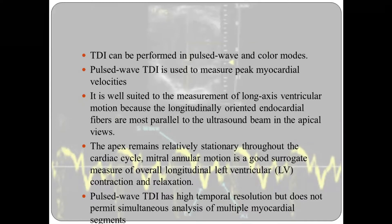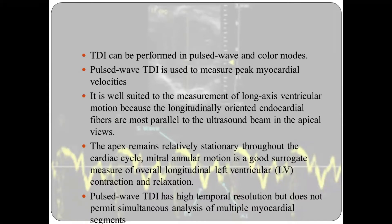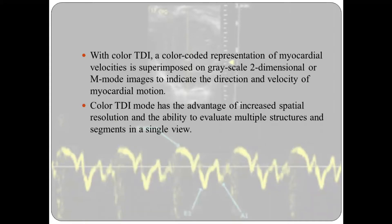Tissue Doppler imaging can be performed in pulse wave or color mode. Pulse wave tissue Doppler imaging is used to measure the peak myocardial velocities. It is well suited for measurement of long-axis ventricular motion because longitudinally oriented endocardial fibers are most parallel to the ultrasound beam. The apex remains relatively stationary throughout the cardiac cycle. Mitral annular motion is a good surrogate measure of overall longitudinal LV contraction and relaxation. Pulse wave tissue Doppler imaging has high temporal resolution but does not permit simultaneous analysis of multiple myocardial segments.